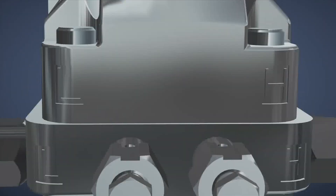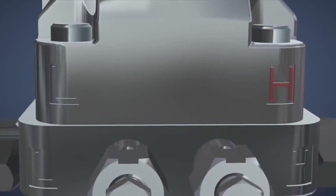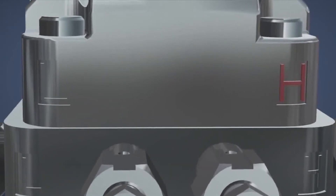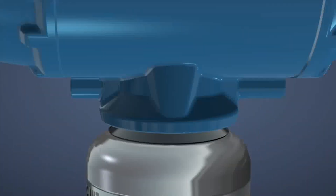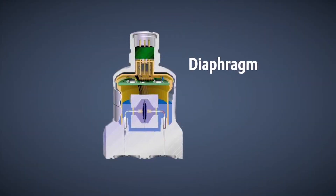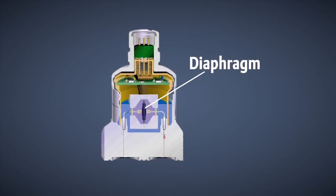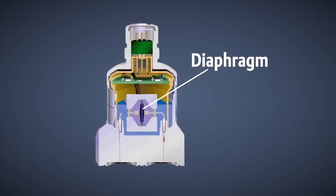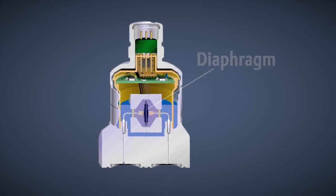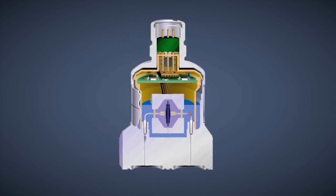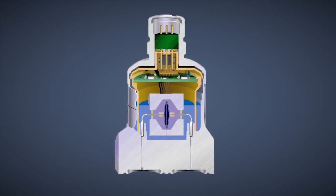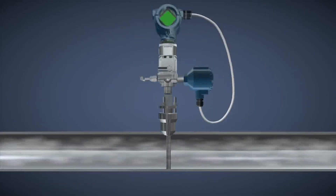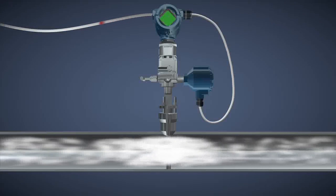On one side of the transmitter is the high-pressure side; on the other, the low-pressure side. The diaphragm deflects relative to the pressure change from one side to the other. It is very sensitive and can detect very small changes in pressure. The transmitter then relays the DP measurement to the control system.